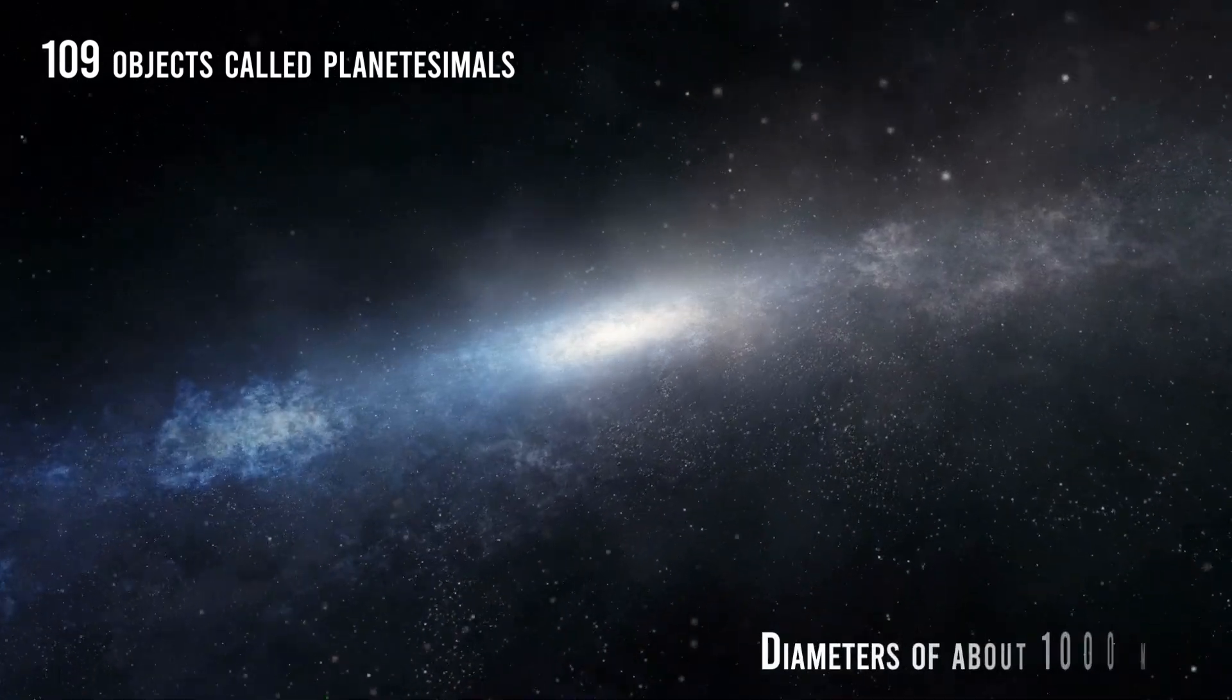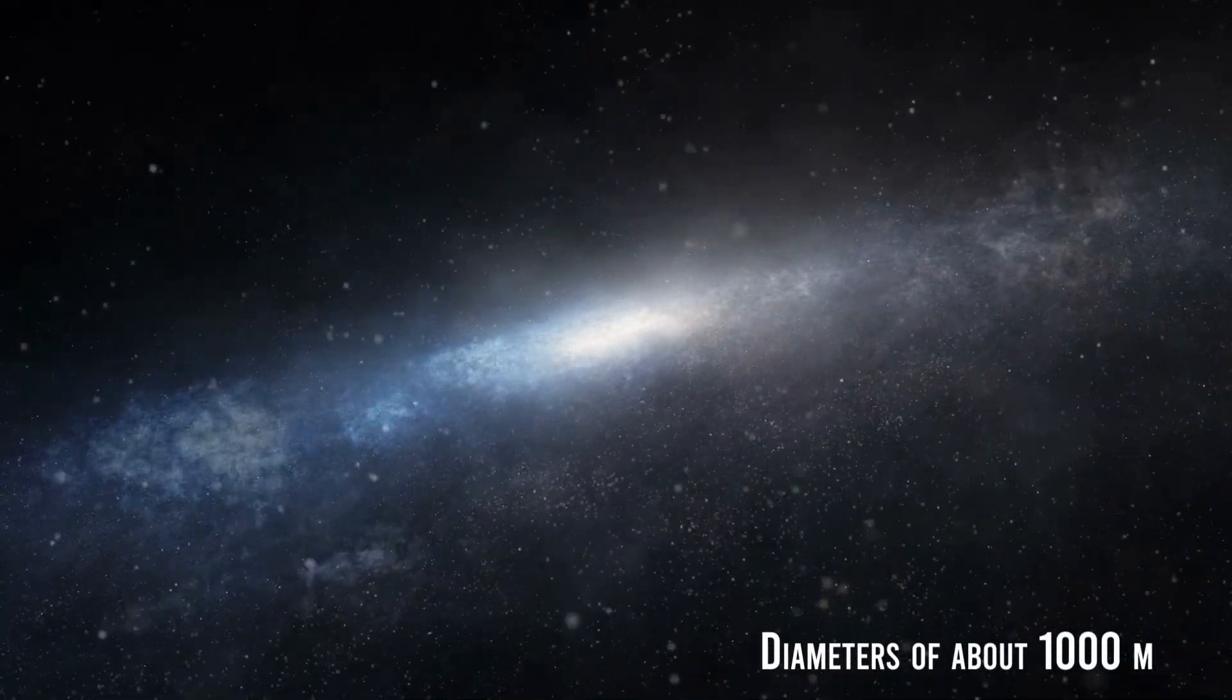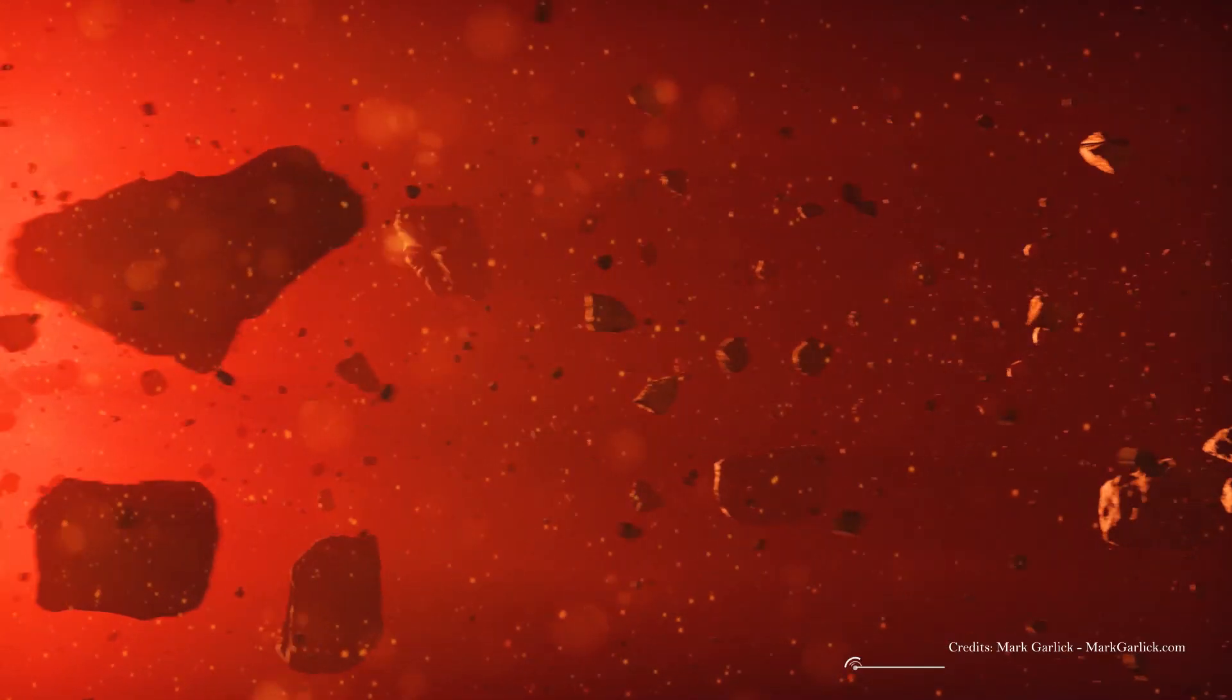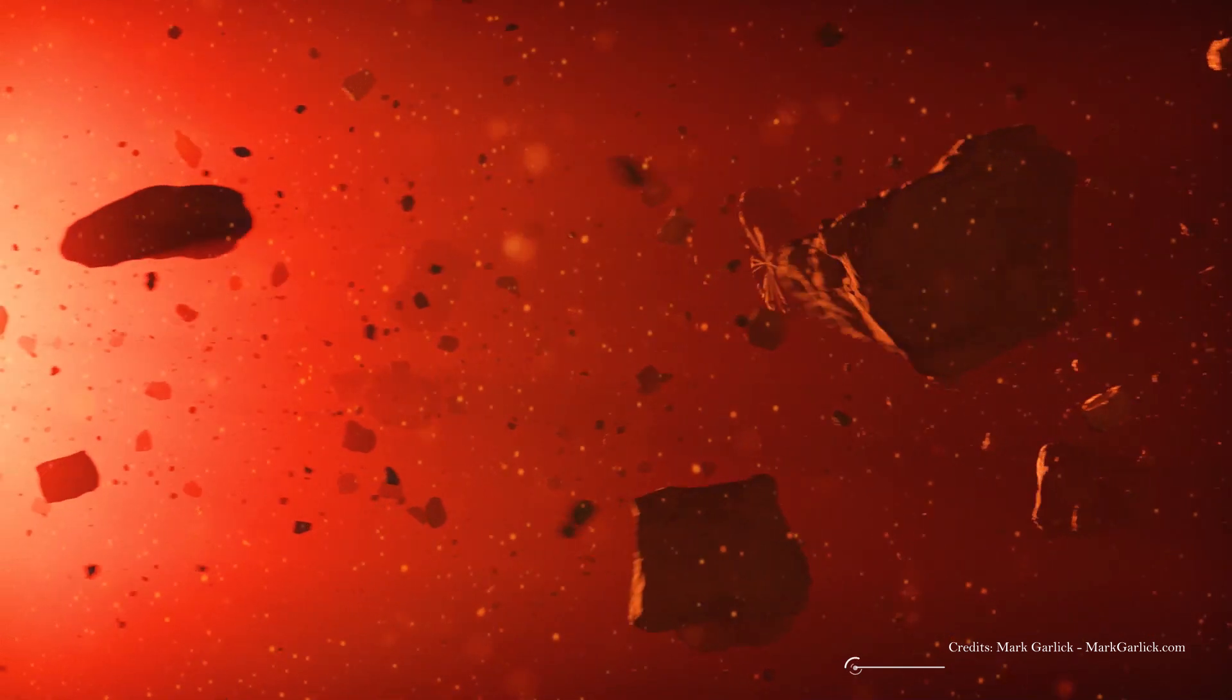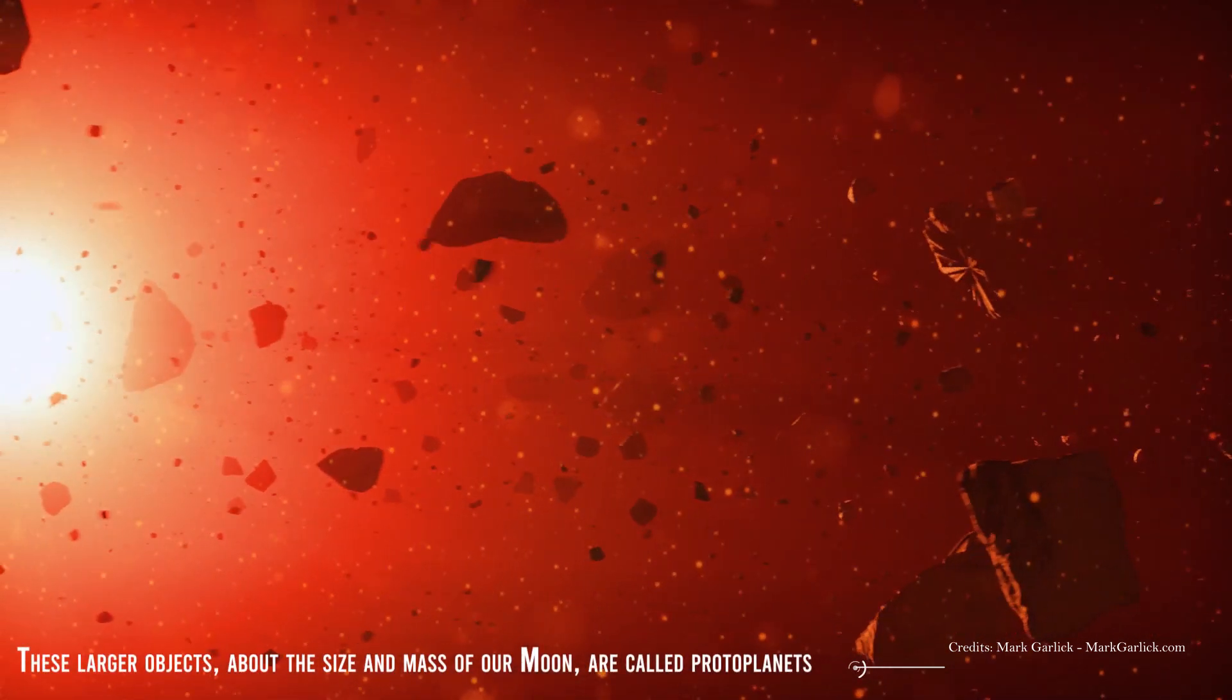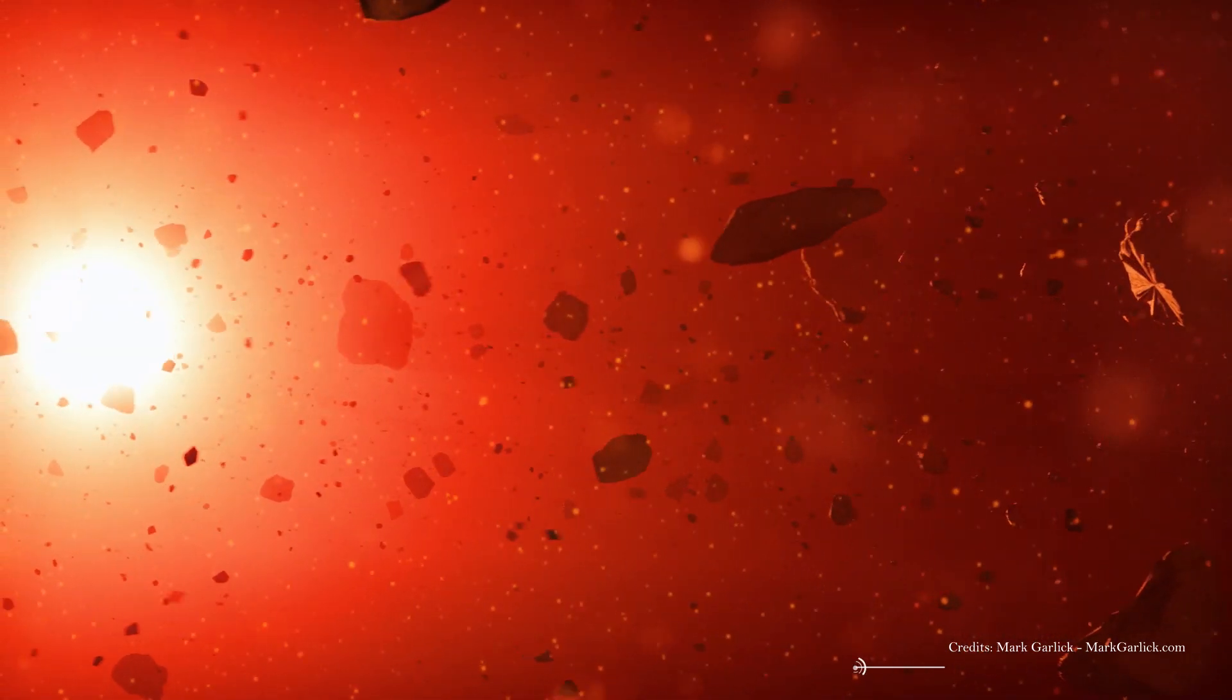Over a few million years, many of these chunks had merged together and there were about 109 objects called planetesimals, with diameters of about 1,000 meters. Over time, the planetesimals continued to collide and join together, attracted by gravity. These larger objects, about the size and mass of our Moon, are called protoplanets. The accumulation of material to form planets in this way is called accretion.